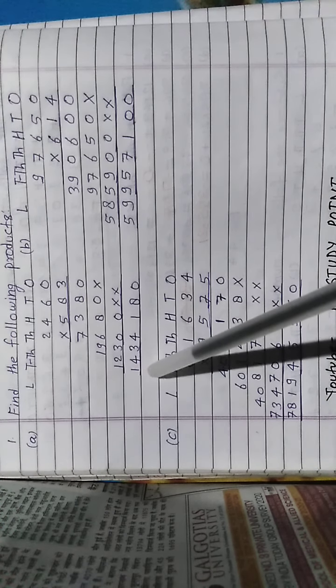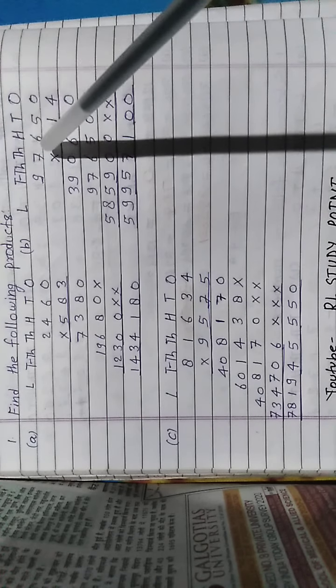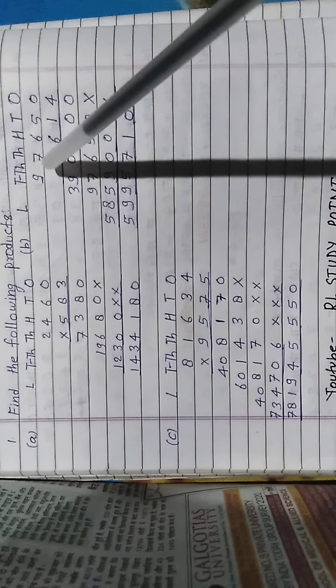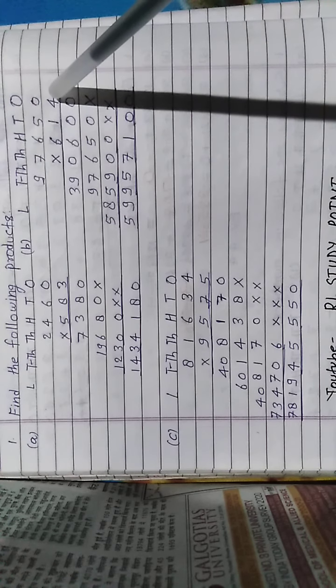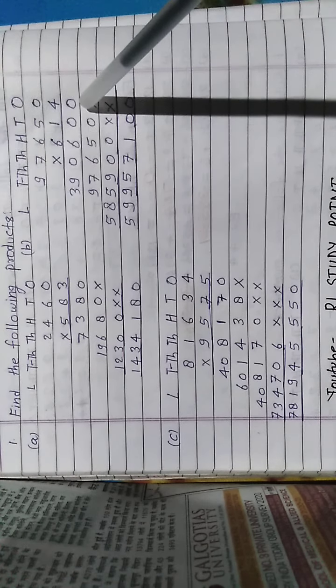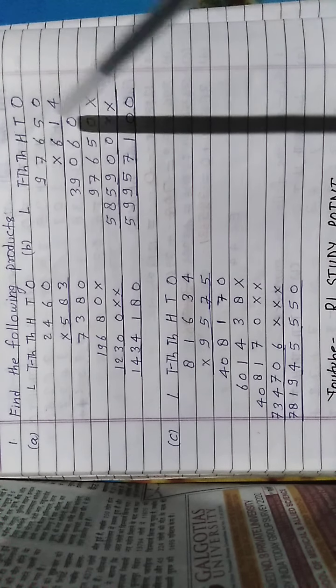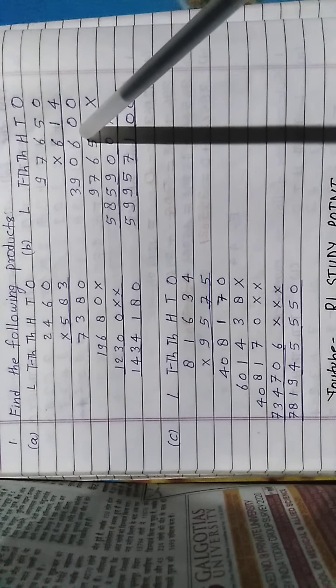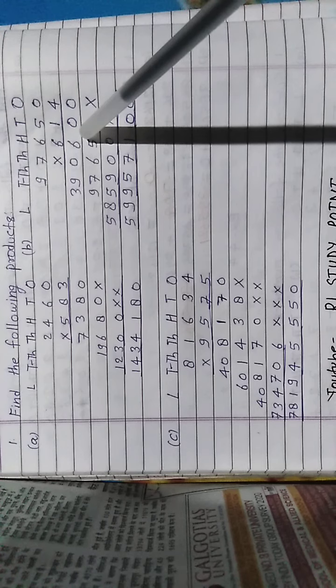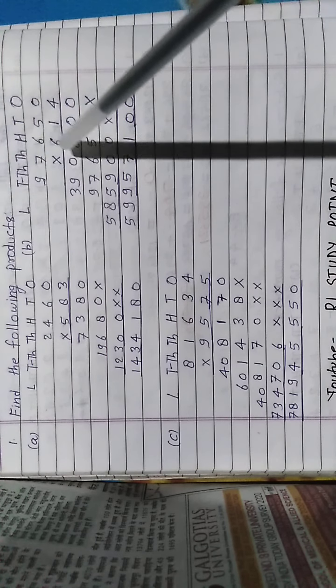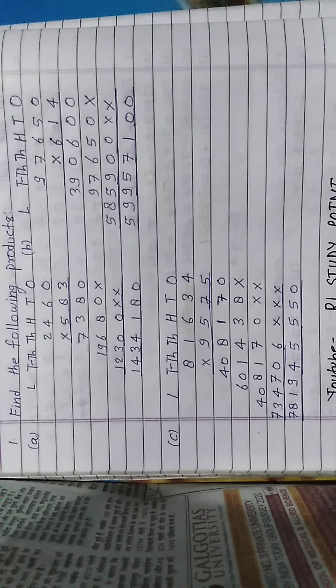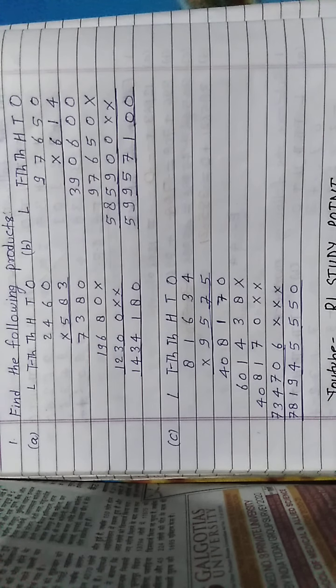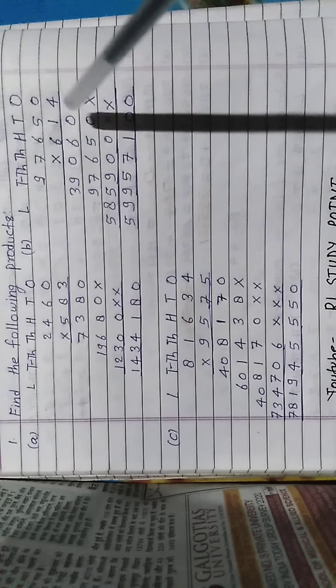9 times 3 is 9, 9 times 3 is 12 and 1 carry 13, 3 carry 1. 2 times 1 is 3 and 1 carry 4. That's answer 1. Question number b: that's 97650 multiply by 614. This 4 times 0 is 0, 4 times 5 is 20, 0 carry 2. 4 times 6 is 24 and 2 carry.